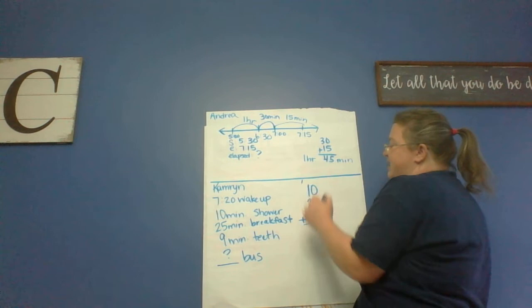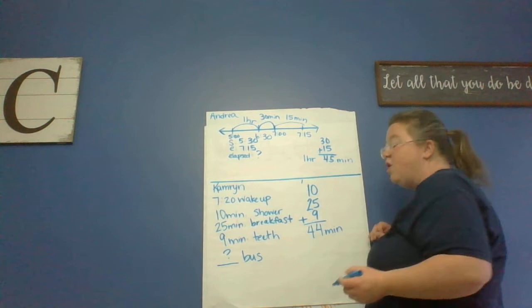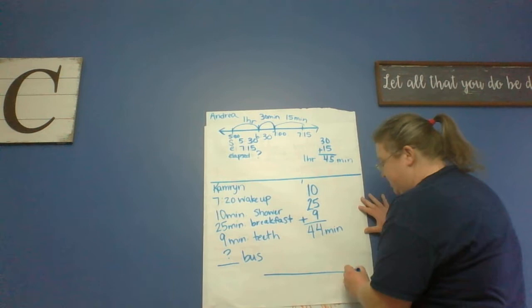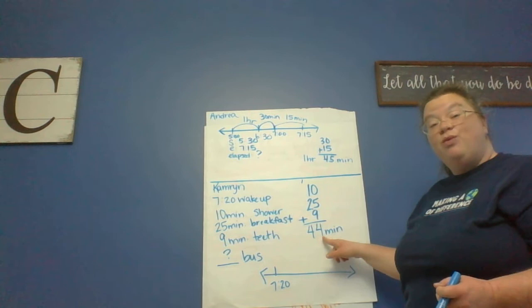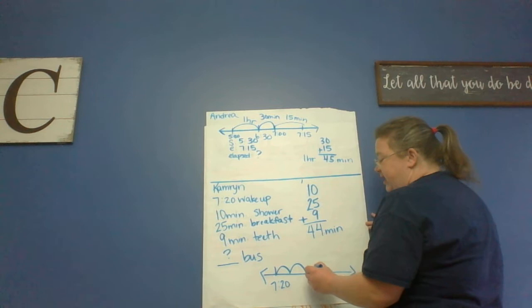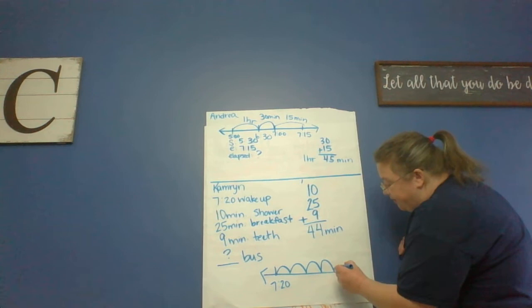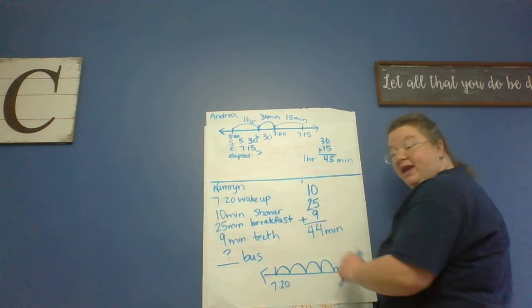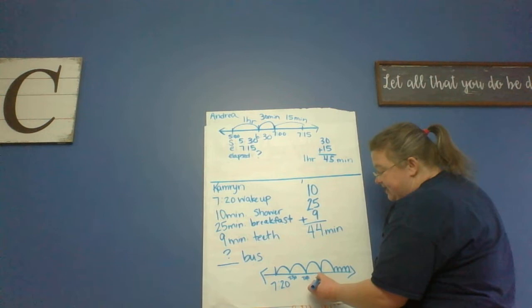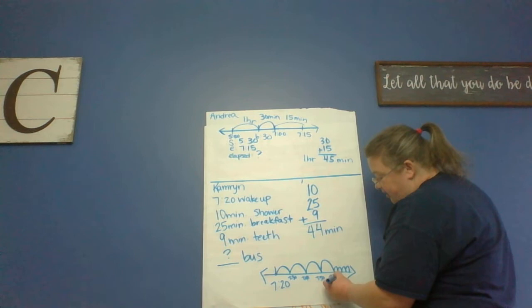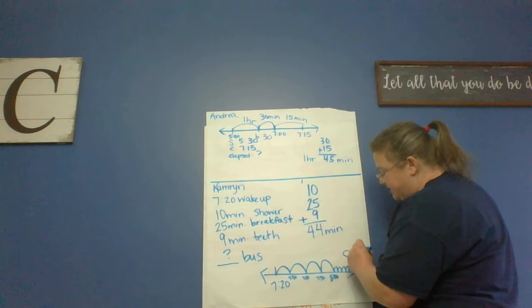So let's do a number line, and remember her start time is 7:20. I'm going to go in 10-minute jumps and then ones to get this 44 minutes. So 10, 20, 30, 40, 41, 42, 43, 44. Okay, so 7:20 plus 10 minutes would be 7:30, plus 10 more minutes would be 7:40, plus 10 more minutes would be 7:50, plus 10 more minutes would be 8 o'clock, plus 1, 2, 3, 4. Her time she better get on her bus is 8:04.